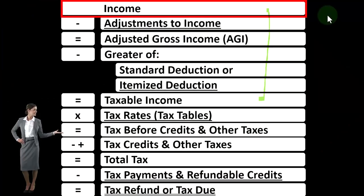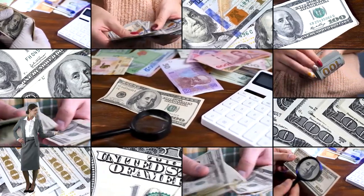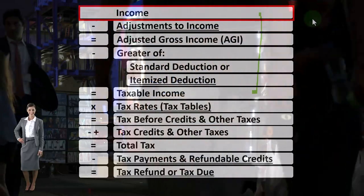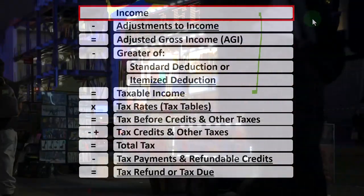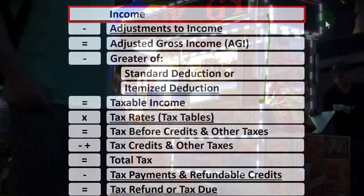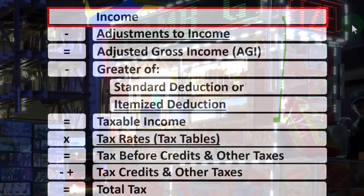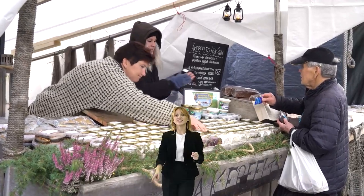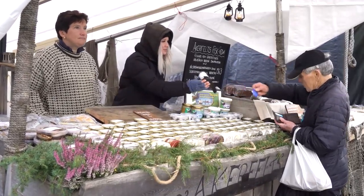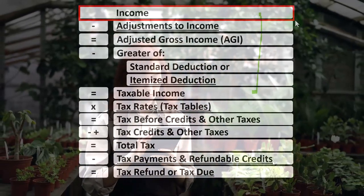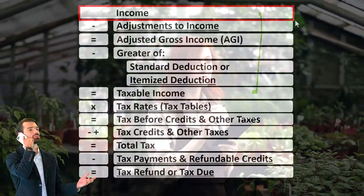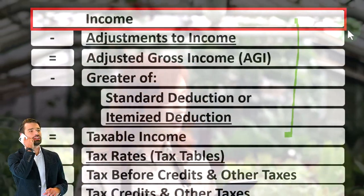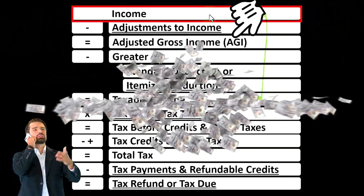Schedule C is a whole other income statement, and one that is much more what we're used to seeing. We'll have income from the business and expenses from the business. Those expenses are still essentially deductions, but they're natural deductions you'd expect in an income tax system — the things consumed to generate revenue — so that you tax people on net income, not gross income. The net income from Schedule C flows into the income line on Form 1040.